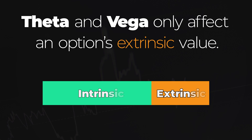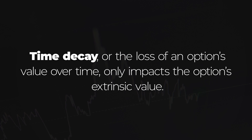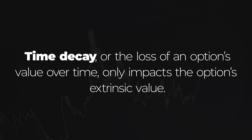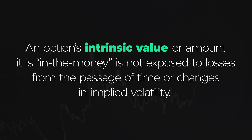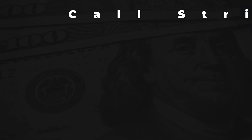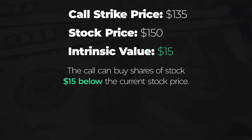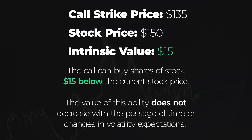Theta and Vega only affect an option's extrinsic value, not its intrinsic value. Time decay — the loss of an option's value over time — only impacts extrinsic value. The intrinsic value of an option, meaning the amount it is in the money, remains unaffected by the passage of time or changes in volatility. For example, if we have a call with a strike of $135 and the stock price is at $150, this call has intrinsic value of $15 — the ability to purchase shares $15 below market price — and that value will never change no matter how much time passes or how much volatility changes.